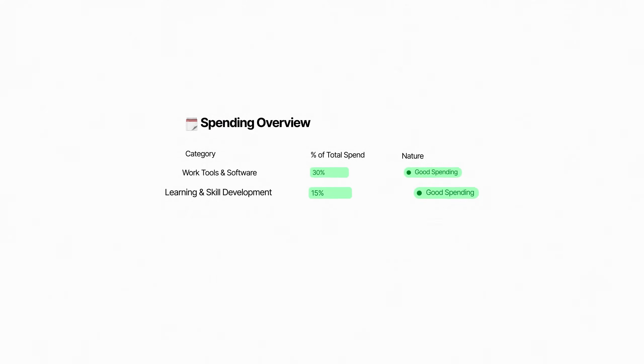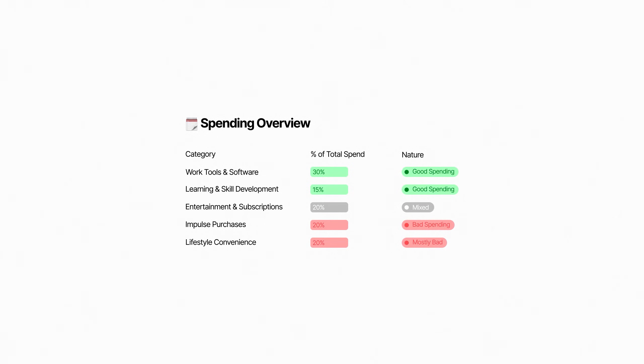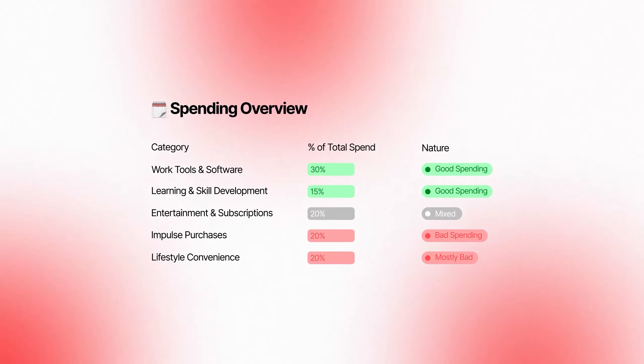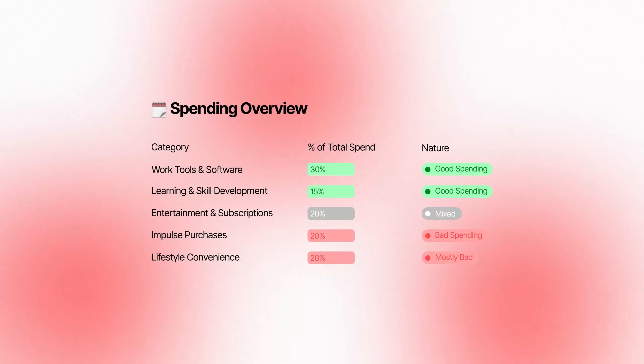Here's the thing — even when people finally see where the money is going, they still get stuck on the 'okay, now what?' part. It's easy to feel motivated looking at reports, and then immediately fall back into the same spending habits because there's no clear next step. I want this app to do more than point out the problem — it should help the user follow a realistic plan. So I'll tell Base44 to build a saving plan generator.